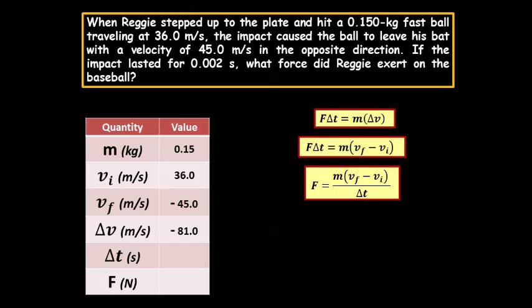You can see that delta v is v final minus the initial. So, v final is negative 45 minus a positive 36, which would equal a negative 81.0. Please verify this before you continue. And if you have any questions, write them down and ask me the next day in school.